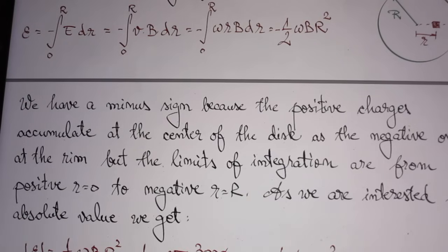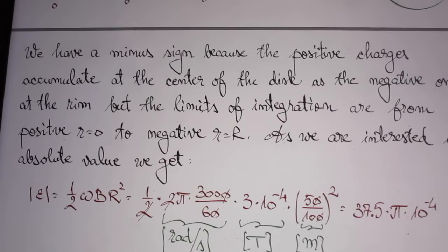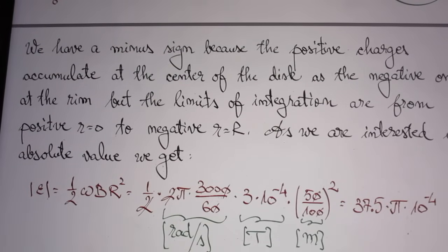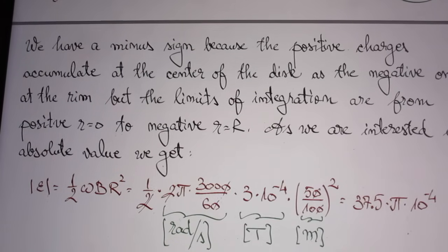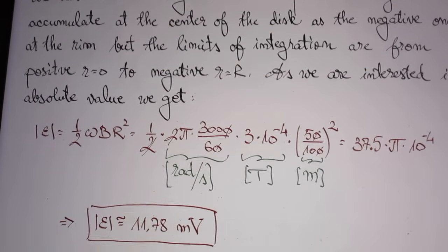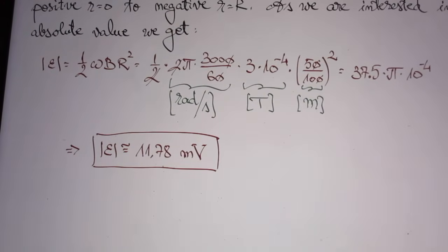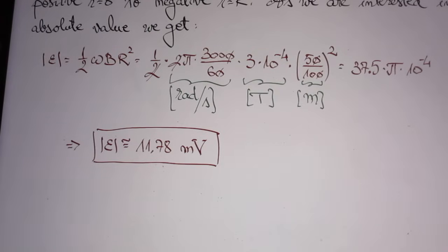That EMF is then one half omega B R squared. He mentions a minus sign, but that is not relevant because I didn't ask for the direction of the potential difference. So he massages it a little bit further — the one half omega B R squared — and out pops this final result: 11.78 millivolts.